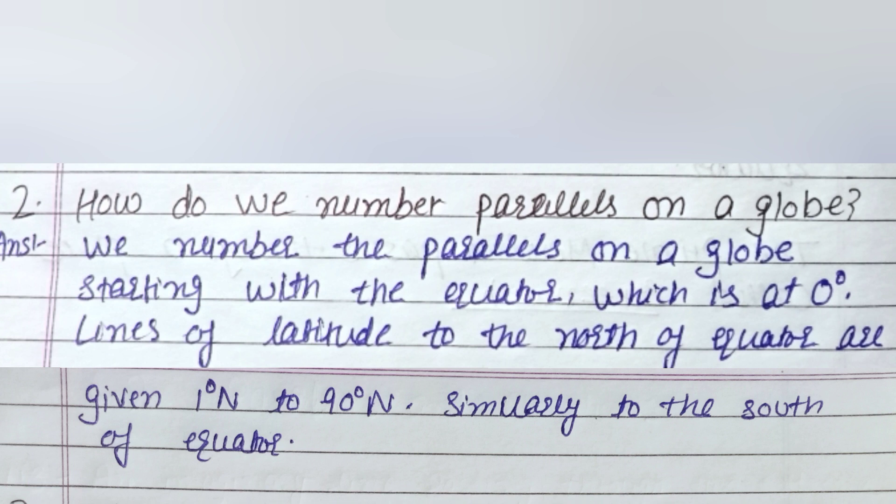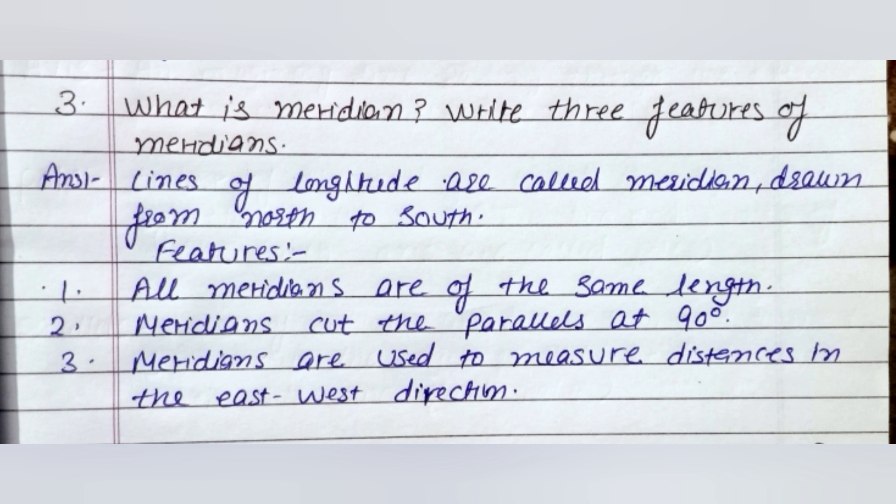Question number three is: What is a meridian? Write three features of meridians. Answer of this question is: Lines of longitude are called meridian, drawn from north to south. Features of meridians are: first one is all meridians are of the same length; meridians cut the parallels at 90 degrees; meridians are used to measure distances in the east-west direction.